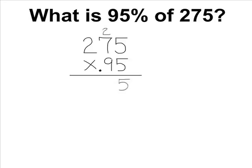5 times 5 is 25, so we carry the 2. 5 times 7 is 35, plus 2 is 37. We write the 7 below and we carry the 3. 5 times 2 is 10, plus 3 more is 13.